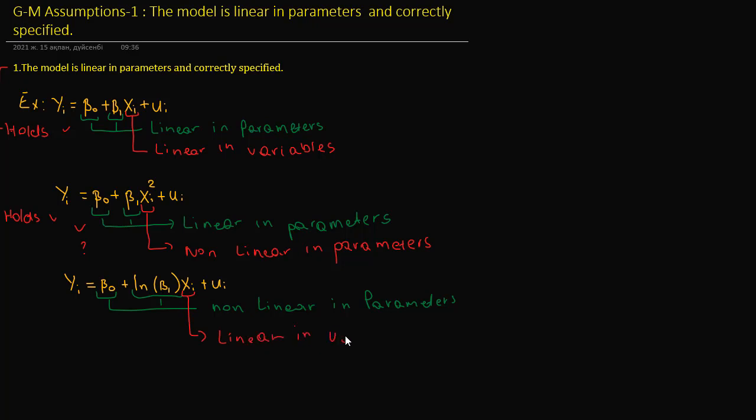For us, it's important to be linear in parameters. This example doesn't satisfy the condition to be linear in parameters. Since it's not satisfied, it violates the assumption of linearity in parameters.